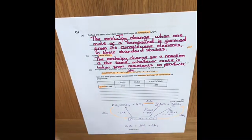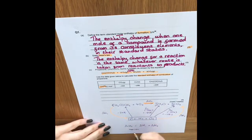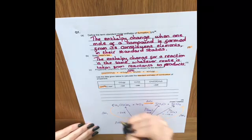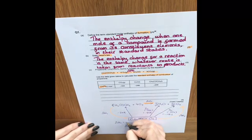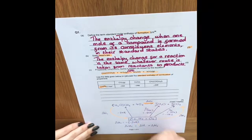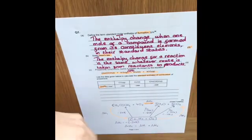Now the bit where people maybe stumble is looking at which way arrows are going and getting your signs correct. So in Δh1 we are going against the arrow, so we need to take that away. So it's minus -248. We should know that two minuses are going to make a plus, so that's just going to be +248.